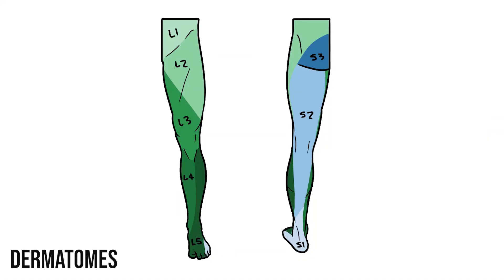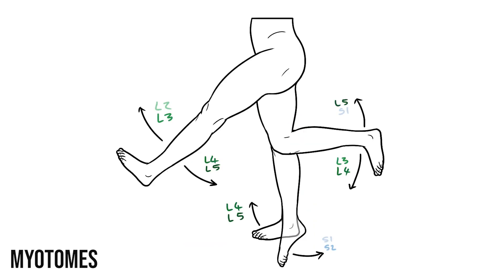For example, if L4 was damaged, we'd have altered or lost sensation across the medial aspect of the leg. We'd also expect to see weakness in extension of the hip, knee, and ankle. Remember, if the pattern of dermatome and myotome loss doesn't match up, then it's not likely to be a nerve root injury.